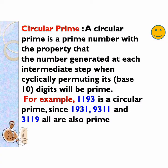A circular prime is a prime number with the property that the number generated at each intermediate step when cyclically permuting its digits will also be prime. For example, 1193 is a circular prime since 1931, 9311, and 3119 are also prime numbers. So you can say that 1193 is a circular prime.